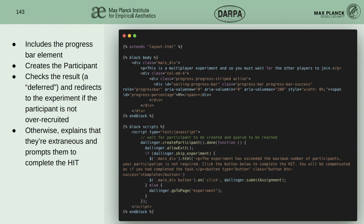It waits for a message back from the server about the status of the createParticipant call. One possibility is that the server will conclude we already have enough people and this person isn't needed at all. It will set skipExperiment on the Dallinger JavaScript object. In that case, we explain that we've already got enough people — click below to complete the HIT. You'll still be paid, but you're not going to go into the experiment itself. This could be overridden with more explanatory language as long as you have those core elements.